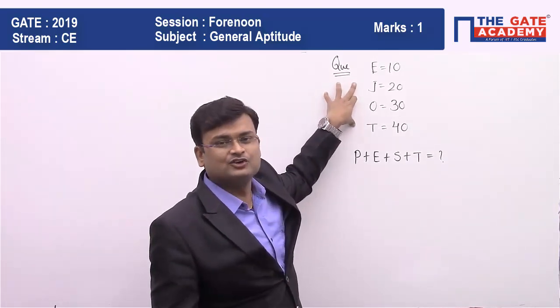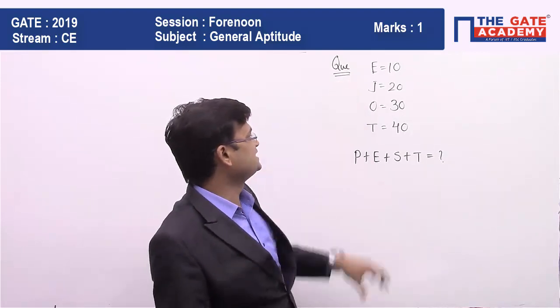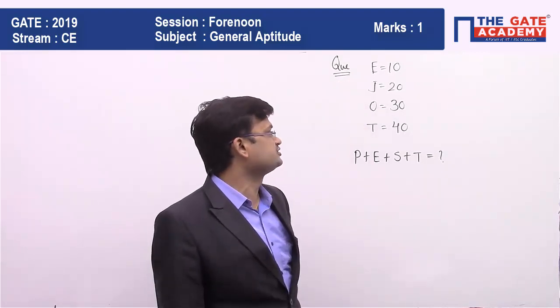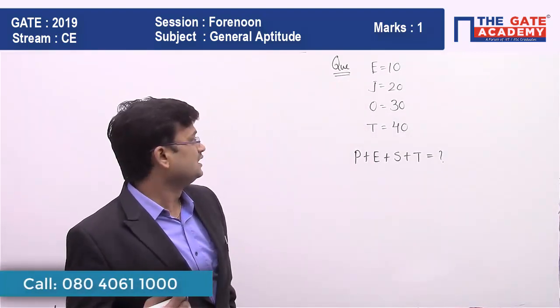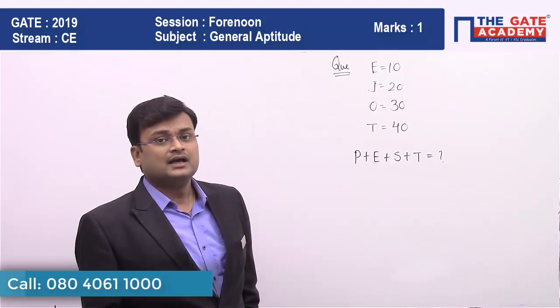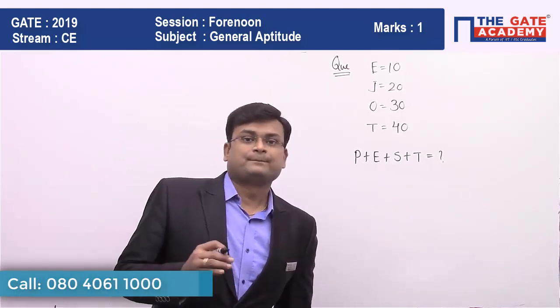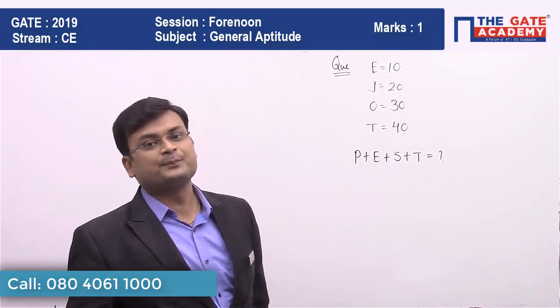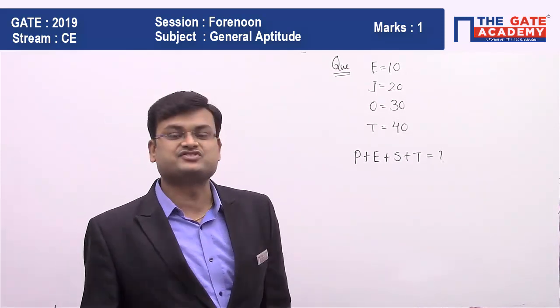The question has given values for four alphabets: e is equal to 10, j is equal to 20, o is equal to 30, t is equal to 40. The question asks for the addition of p plus e plus s plus t.